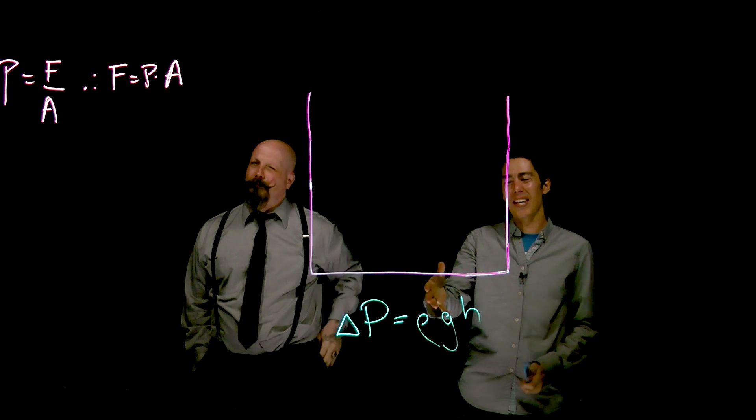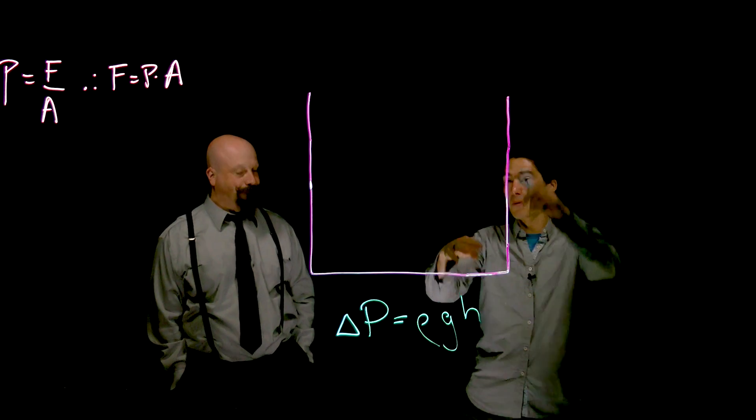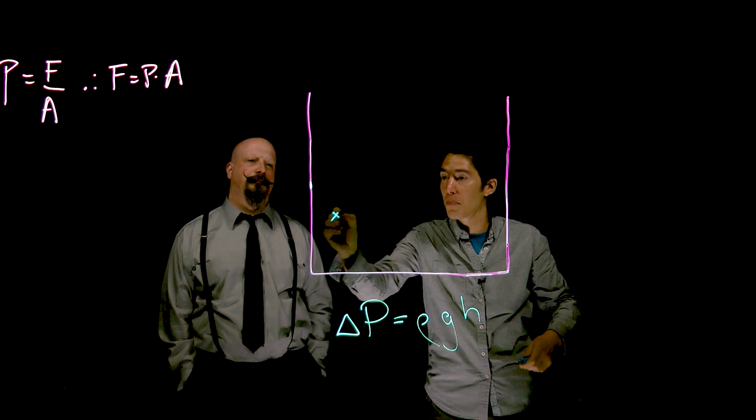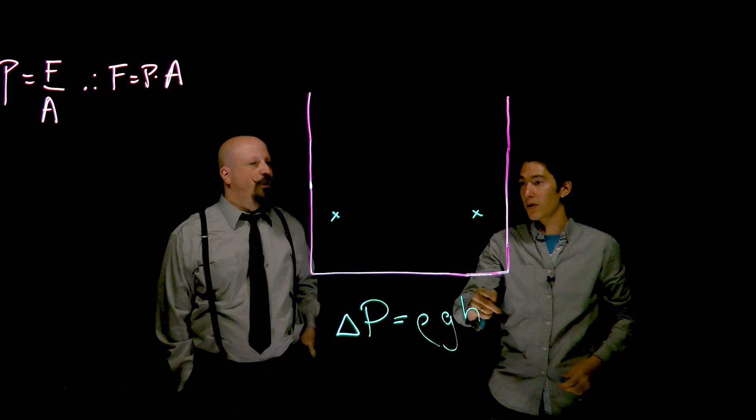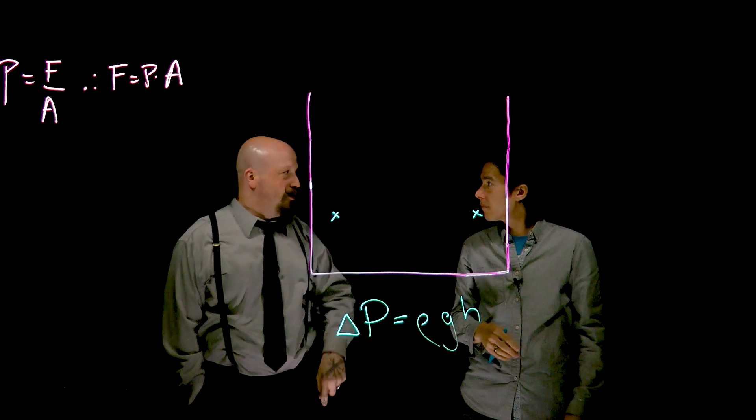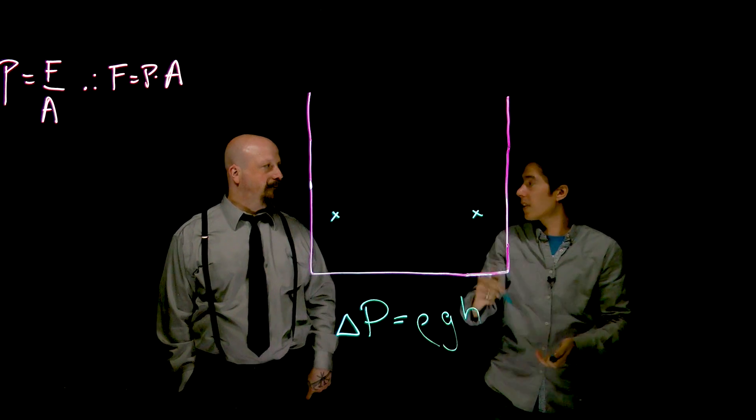Okay. So we've established that in a liquid, the pressure increases the further down you go. And comparing two points, any two points here, if there's a difference in depth, then there's a difference in pressure. So here, we would have the same pressure. Absolutely. It doesn't, lateral differences don't matter, it's just the vertical differences in a liquid.